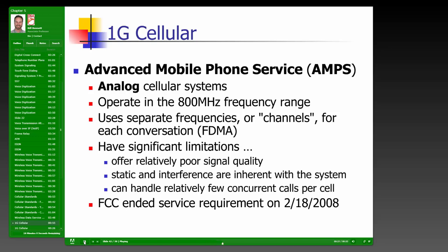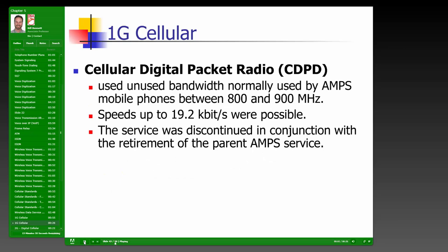The 1G analog cellular system operated in the 800 MHz range using FDMA, but had poor signal quality, interference, and limited concurrent calls per cell. The FCC ended service requirements for AMPS on February 18, 2008. CDPD used unused AMPS bandwidth between 800 and 900 MHz at 19.2 kbps and was also discontinued in 2008 with the retirement of AMPS.